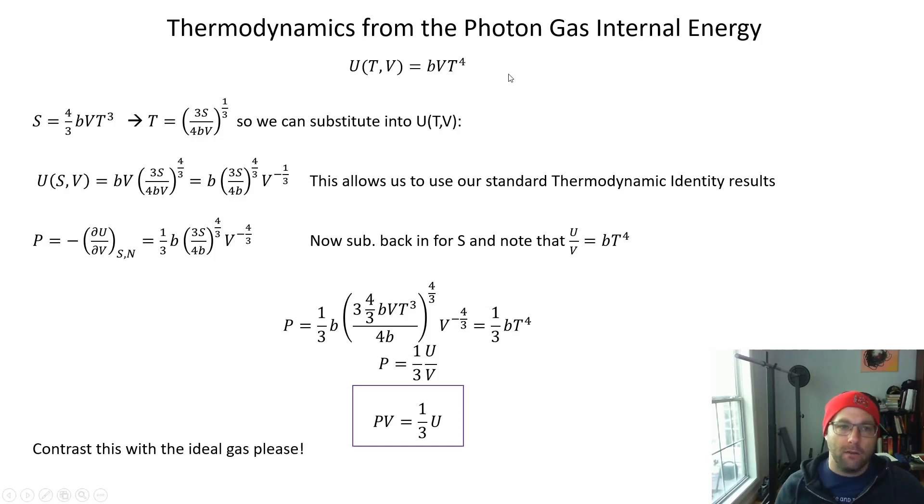What we can do is use the two formulas we derived. We have U as a function of T and V, and S as a function of V and T. We can solve for temperature in terms of S from this expression, then substitute this temperature into here, the T to the fourth, to get U as a function of S and V.